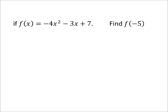So, if f of x equals negative 4x squared minus 3x plus 7, find f of negative 5.